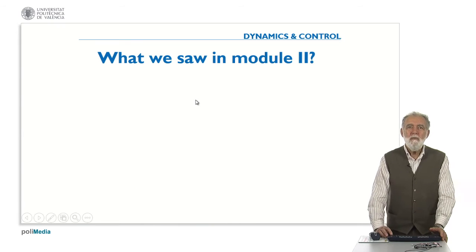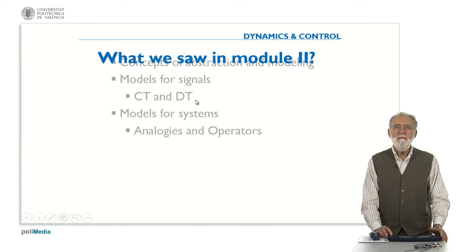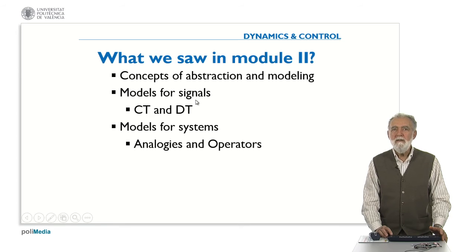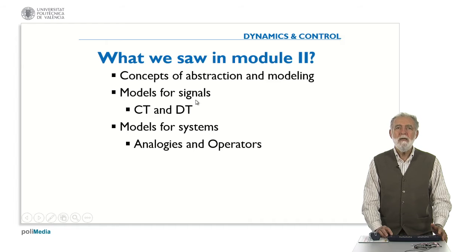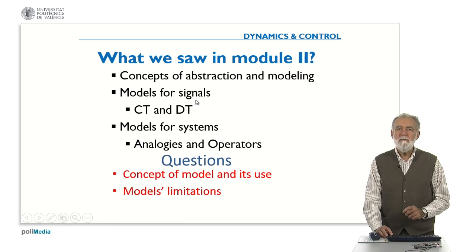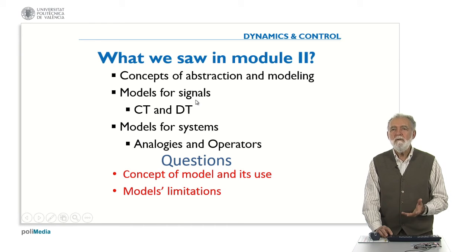So what we saw in module 2, we saw the concepts of abstraction and modeling, either for models or signals. We considered continuous time and discrete time signals. And we derived some models and analyzed the analogies and operators. So the questions today will be about what is the concept of the model and how this model can be used and which are the limitations of the models.